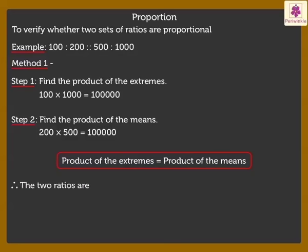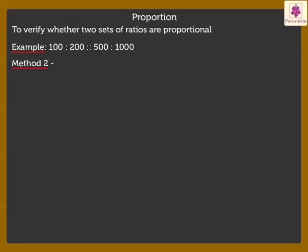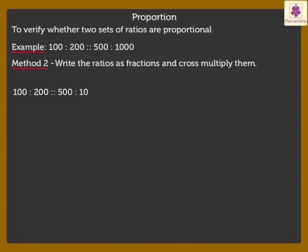Therefore, the two ratios are in proportion. Method 2: It can also be verified by writing the ratios as fractions and cross-multiplying them. Here we write 100 is to 200 is as 500 is to 1000 as 100 upon 200 is equal to 500 upon 1000.